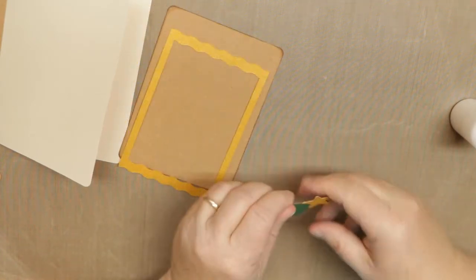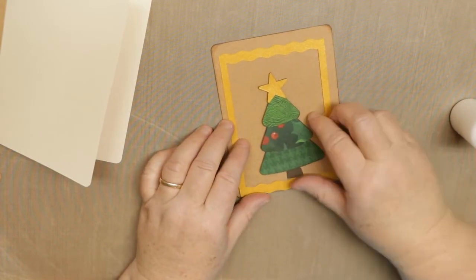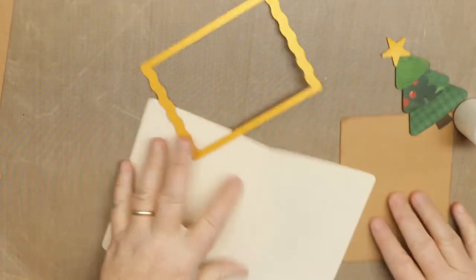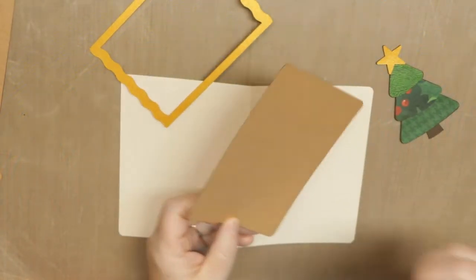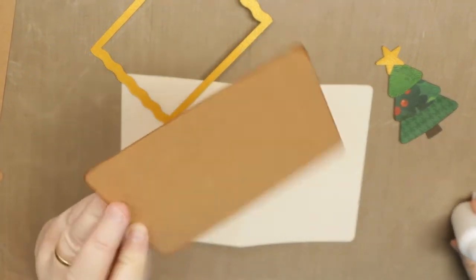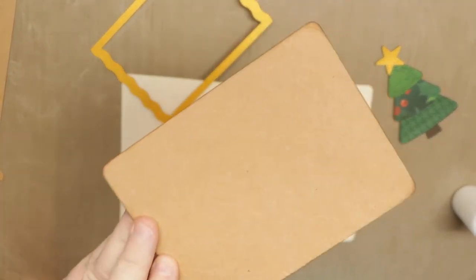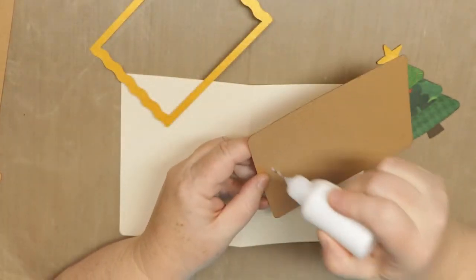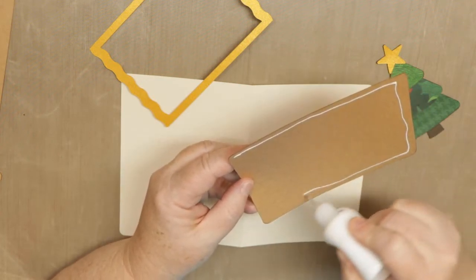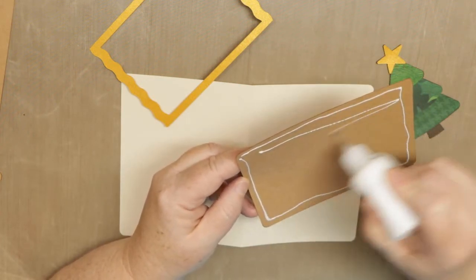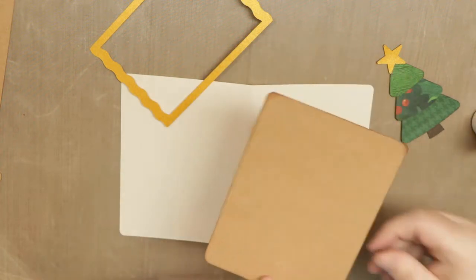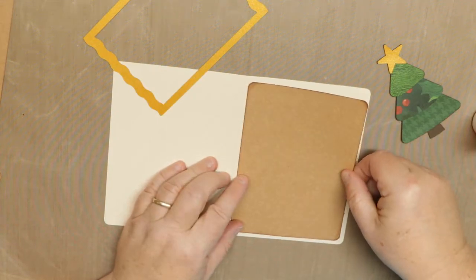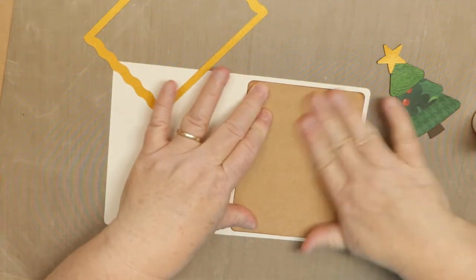When gluing this onto here, I'd recommend laying it flat. I don't know if you can see this, but this is the Die Cuts With A View - it's already pre-embossed craft paper. It is nice, I really like it. I usually emboss my own but I found it on sale somewhere and thought what the heck, let's give it a try. I like that little holly one the best for Christmas. There's like little flourish in here.